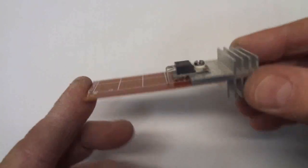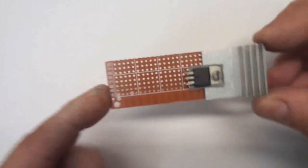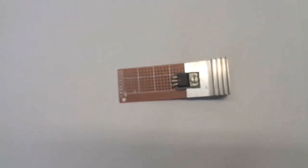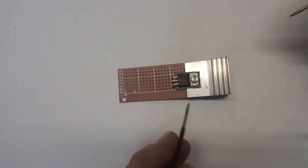So now let's check with the continuity tester if the heatsink is isolated from the rest of the triac.